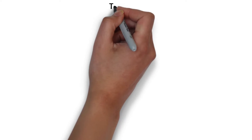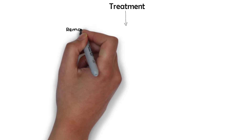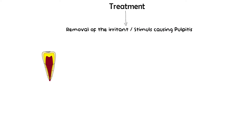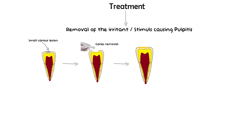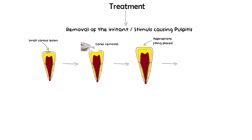The treatment of reversible pulpitis involves removal of the stimulus causing the inflammation. If pulpitis is caused by a small caries lesion, removal of the caries and appropriately filling the tooth with proper insulating material on the dentine to control sensitivity is the best-suited treatment. There is no need for an extensive endodontic procedure such as root canal treatment — simply removing the stimulus and filling the tooth appropriately is sufficient.